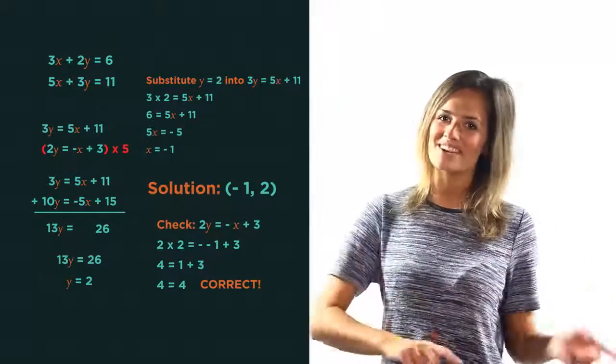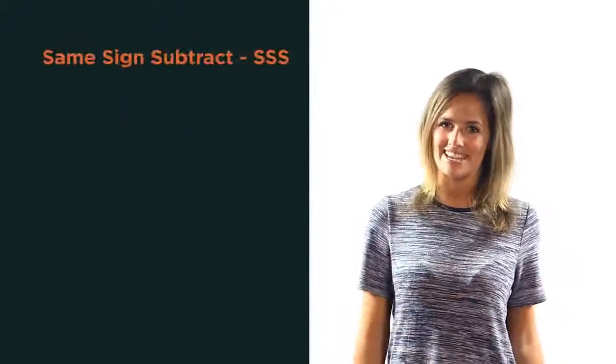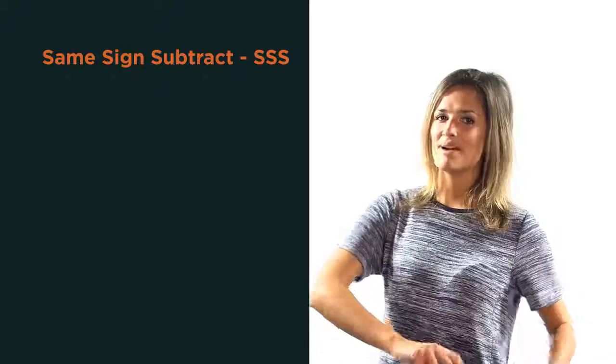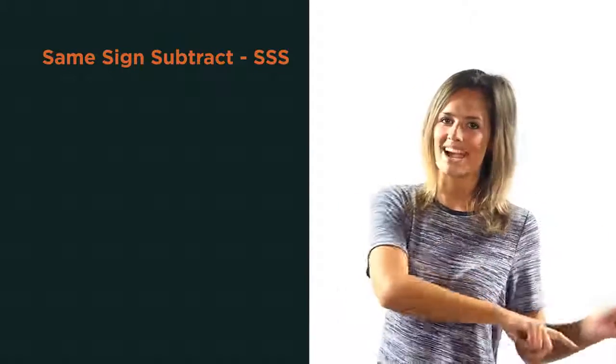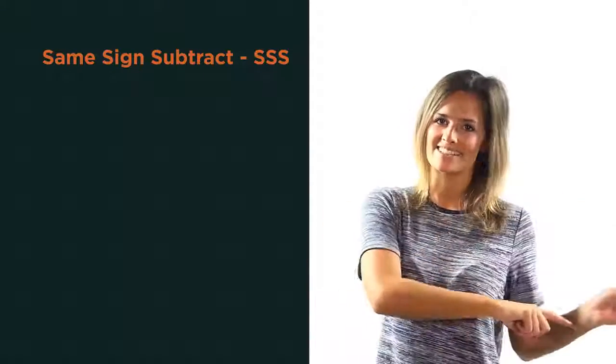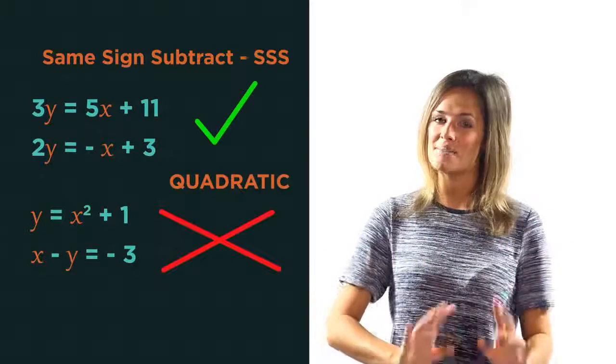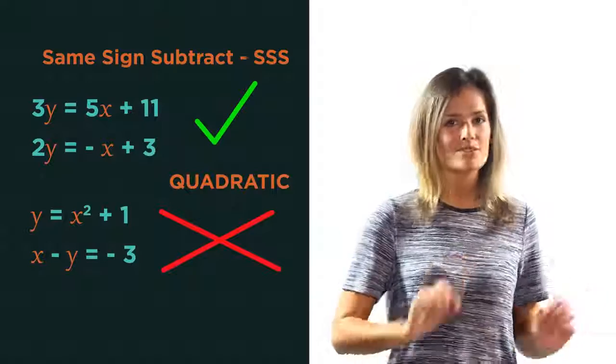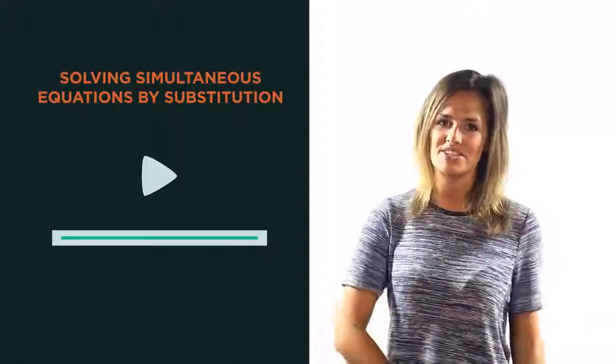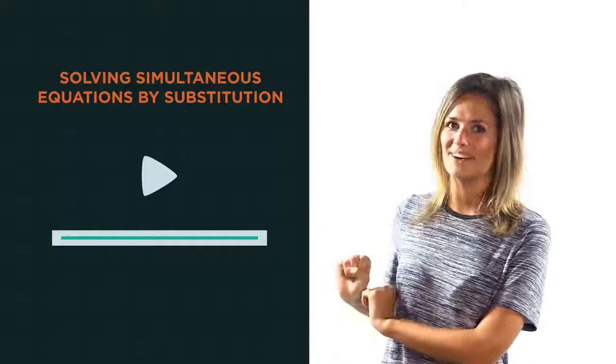So there we have solving simultaneous equations by elimination. You just need to remember, same sign subtract. This works perfectly for linear equations, but won't work if there's a quadratic involved, for example. For that, we have to use substitution. Watch this video to discover how.